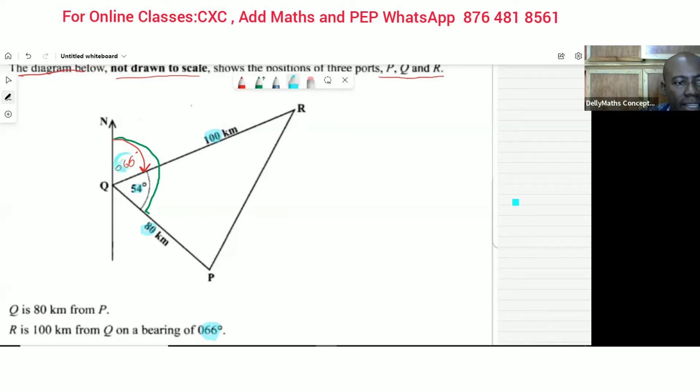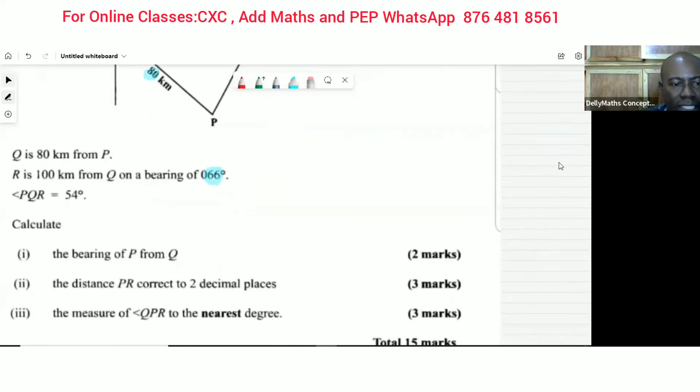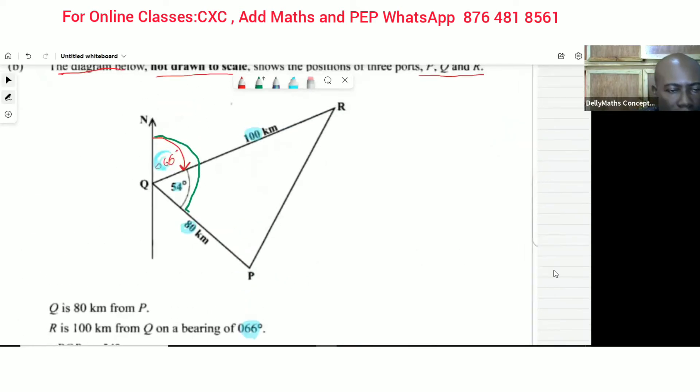We have all of these measurements already, so this one is very simple. If we should add the 66 plus the 54, we would have gotten the bearing that we need. So this is 66 plus 54 and that's going to give us 120 degrees. So that's the bearing of P from Q. I'll just write it on the outside - 120 degrees.